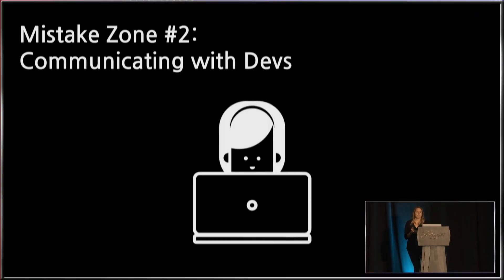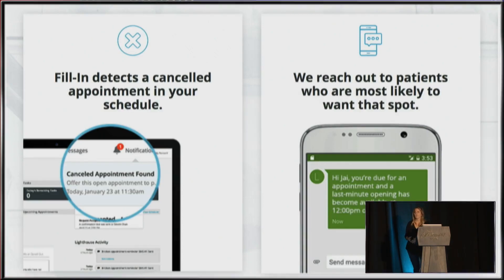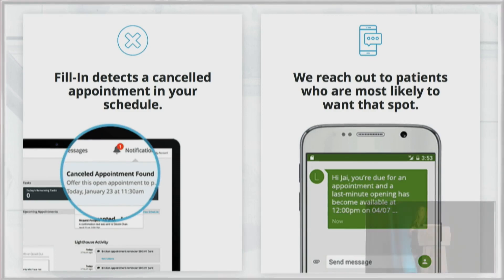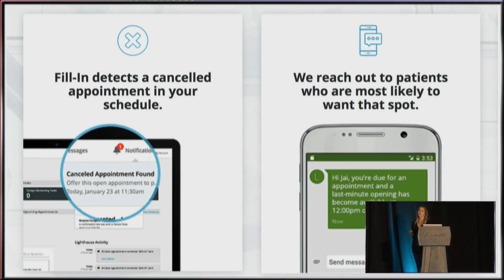Fast forward to mistake zone number two: communicating with devs. I moved to Austin, started a new role. As part of that role, we were working on a really cool feature in a product marketed to dentists and dental offices. When you cancel an appointment there is a hole in the calendar, and we wanted to fill that hole with a person most likely to take a last-minute appointment. I was doing R&D for that algorithm, looking at patterns in appointment history — like do people tend to always make their appointments in the morning or on the same day of the week? We'd ask one question that would generate more questions and we went down the rabbit hole.